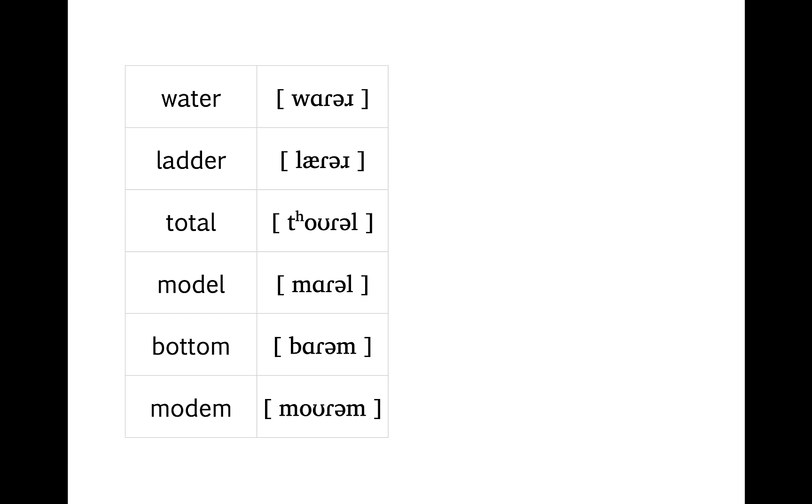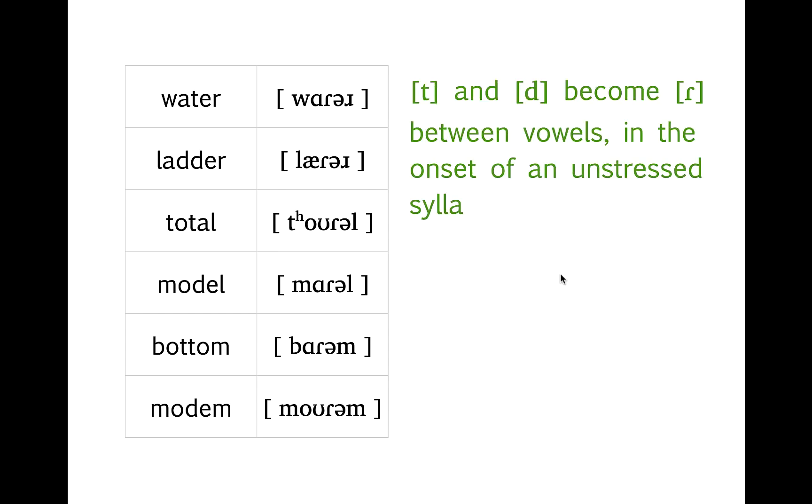Here are some examples: water, ladder, total, model, bottom, modem. Looking at this set of words, we can see a pretty clear pattern, which we could describe in words this way: T and D become the flap between vowels and the onset of an unstressed syllable.